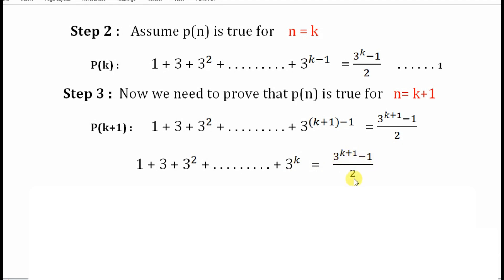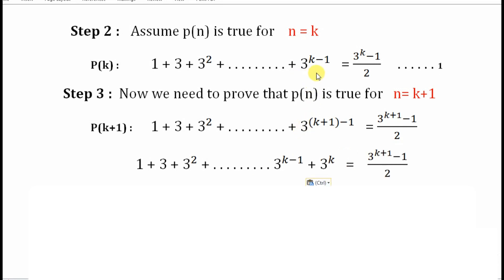Notice that the terms here — 3 squared, 3 raised to 1, 3 raised to 0 — show the powers are in decreasing order. So if there is 3 raised to k as the last term, obviously there will be a term 3 raised to k minus 1 preceding it. As a shortcut, the last term of P(k) will always precede the new term. What we ultimately need to prove is that the whole left hand side equals the right hand side.